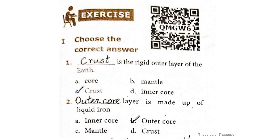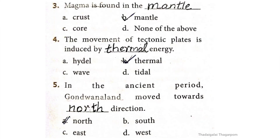Third one: magma is found in the dash. The correct answer is option B: Mantle. Magma is found in the mantle. Fourth one: the movement of tectonic plates is induced by dash energy. The correct answer is option B: Thermal energy. The movement of tectonic plates is induced by thermal energy.